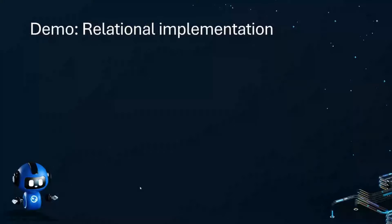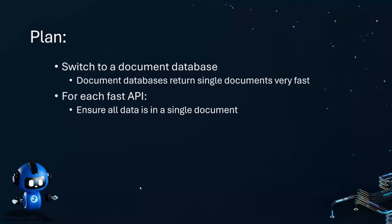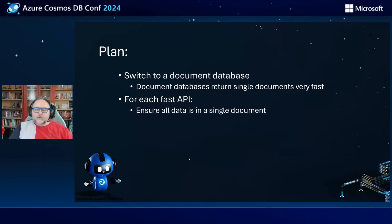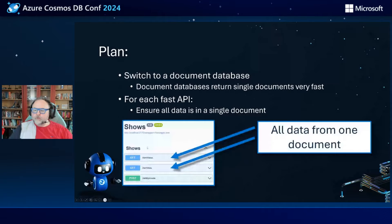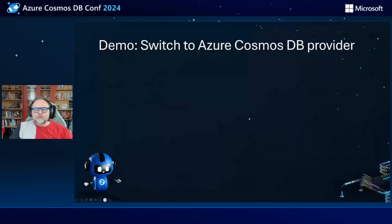So that's where we're starting from, and our plan is to switch to a document database — in this case Azure Cosmos DB for NoSQL. Document databases are very good, very fast at returning a single document or information from a single document. So the important thing is that if we're going to use this for a fast API, we need to ensure that all data for each of those APIs is in a single document.